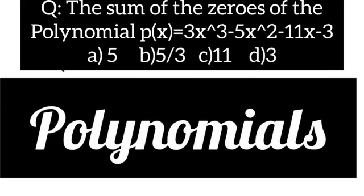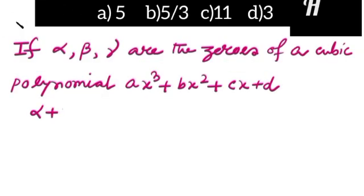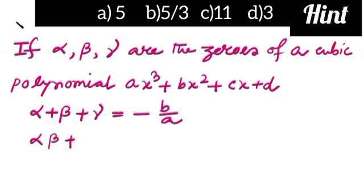Four options are given here. The hint is: if alpha, beta, gamma are the zeros of the cubic polynomial x cube plus bx square plus cx plus d, then alpha plus beta plus gamma is equal to minus b by a.